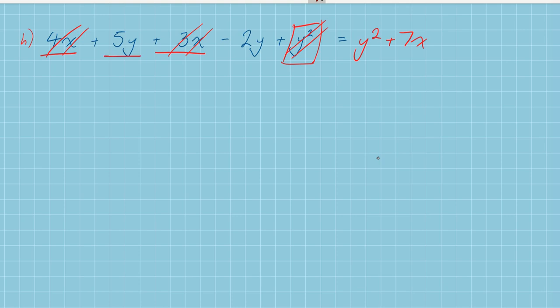Right, so the Y's. 5Y and this is minus 2Y. Now I've got to be really careful because that is take away 2Y, remember. So 5 minus 2, that's going to leave me with 3Y. It's still plus 3Y. So plus 3Y.